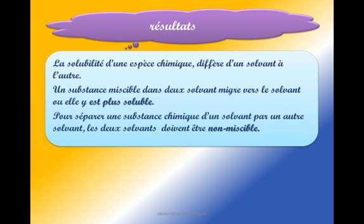Résultat : la solubilité d'une espèce chimique diffère d'un solvant à un autre. Le diiode est soluble dans l'eau et dans le cyclohexane, mais il est plus soluble dans le cyclohexane. Donc, lorsqu'on a mélangé les deux solvants, le diiode est passé de l'eau vers le cyclohexane. Pour séparer une substance chimique d'un solvant par un autre solvant, les deux solvants doivent être non miscibles.